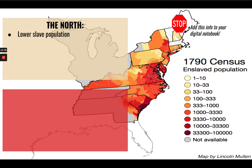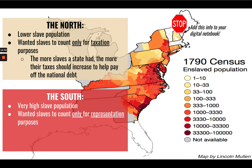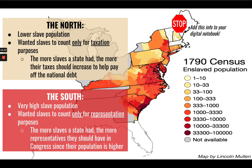The North had a lower slave population and wanted slaves to count only for taxation purposes — the more slaves a state had, the more their taxes would increase to help pay off the national debt. The South had a very high slave population and wanted slaves to count only for representational purposes — the more slaves a state had, the more representatives they should have in Congress.